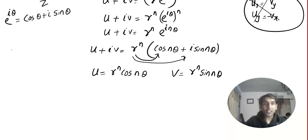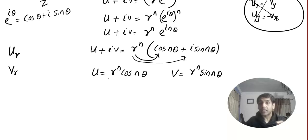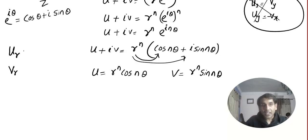So the polar version of the CR equation goes like this: you need to prove that u_r = (1/r)·v_θ and v_r = −(1/r)·u_θ. In polar form, r and θ are the variables — there is no x and y.